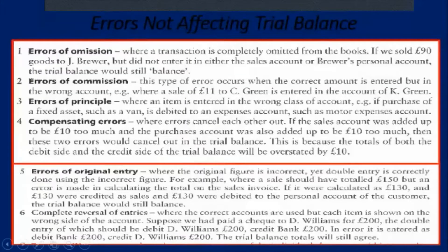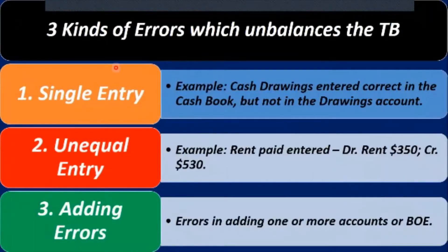So we have the six types of errors that don't affect the trial balance — the trial balance will still balance when these six types occur: errors of omission, errors of commission, errors of principle, compensating errors, errors of original entry, and complete reversal of entries. Then you have the other three types of errors which unbalance the trial balance: single entry, unequal entry, and adding errors.